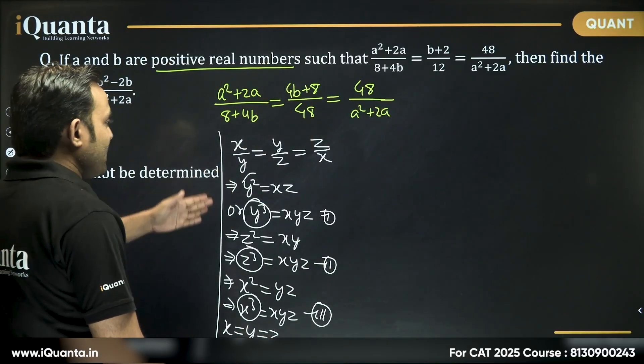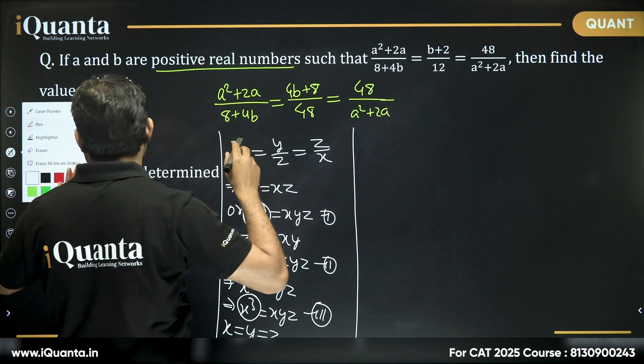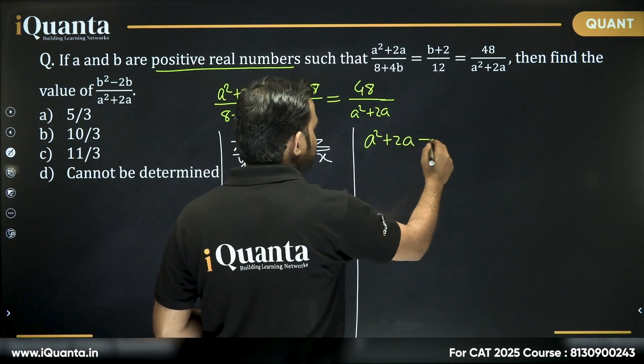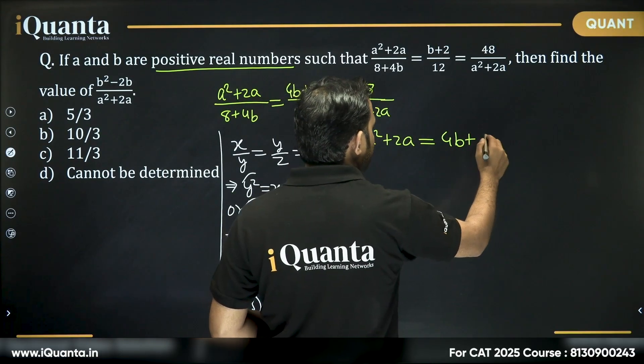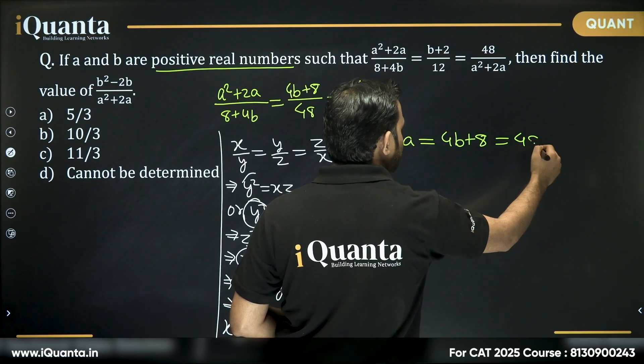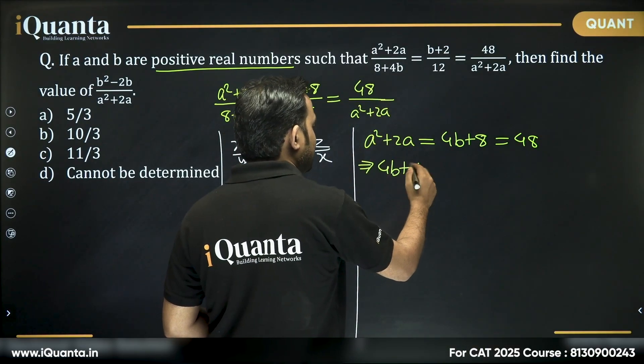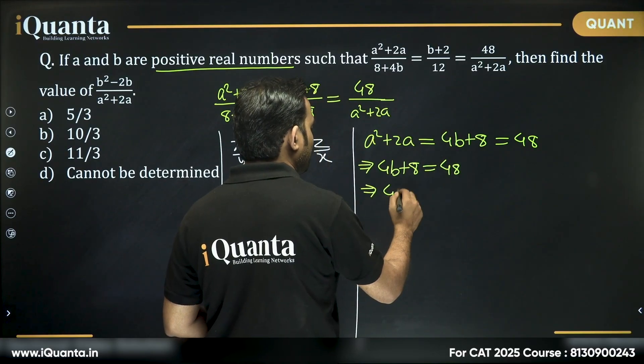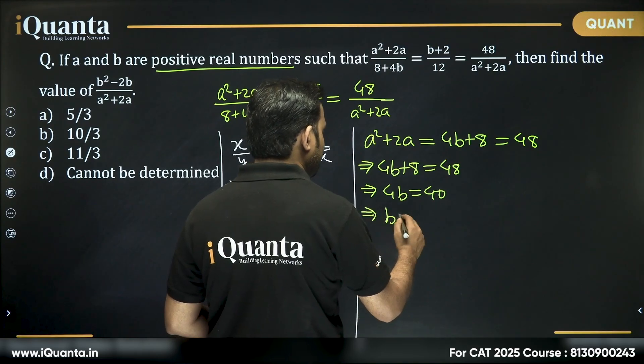Now, if I use this here, can I see that a² + 2a is equal to 4b + 8 and that is also equal to 48. Now, if I solve 4b + 8 is equal to 48, what do we get? We get 4b is equal to 40 or we get b is equal to 10.